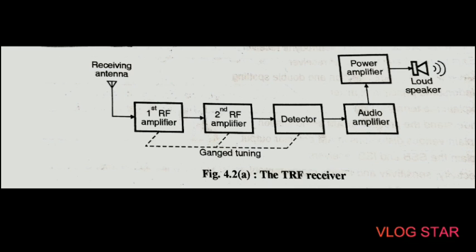There are two types of receivers. The first is TRF — that is, Tuned Radio Frequency receiver — and the second is the superheterodyne receiver. Out of these, the TRF receiver is the oldest and simplest one but has many shortcomings. The superheterodyne receiver is the most popular and widely used receiver due to its many advantages over the TRF receiver.